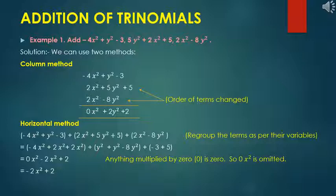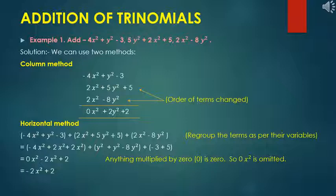Using the horizontal method: write all terms and regroup like terms. (minus 4x² plus 2x² plus 2x²) gives 0x²; (y² plus 5y² minus 8y²) gives minus 2y²; (minus 3 plus 5) gives plus 2. So the answer is minus 2y² plus 2. Since 0x² is zero, it is omitted — anything multiplied by 0 is 0.